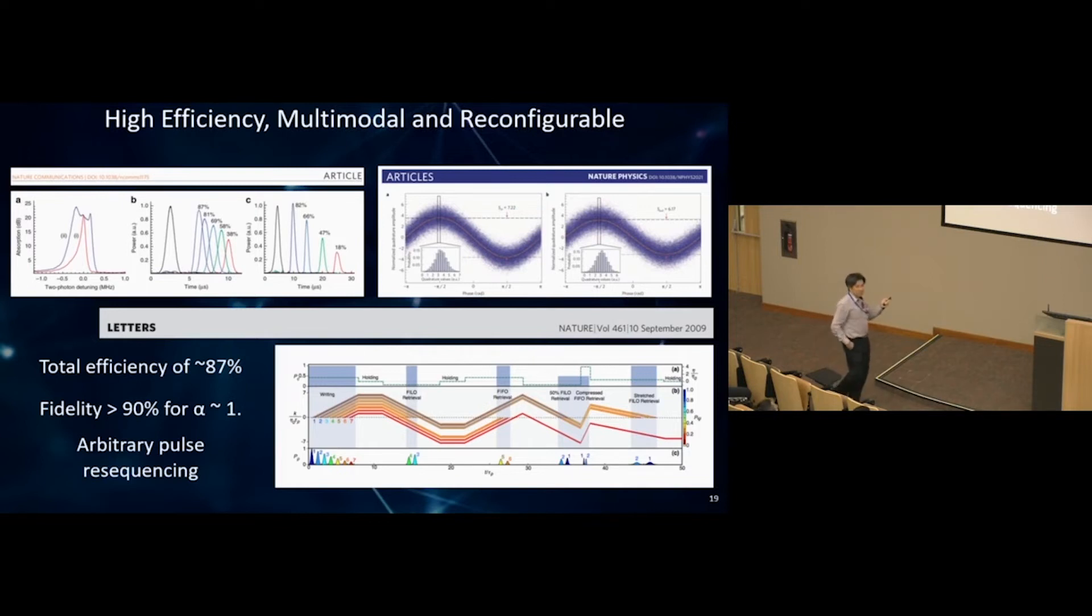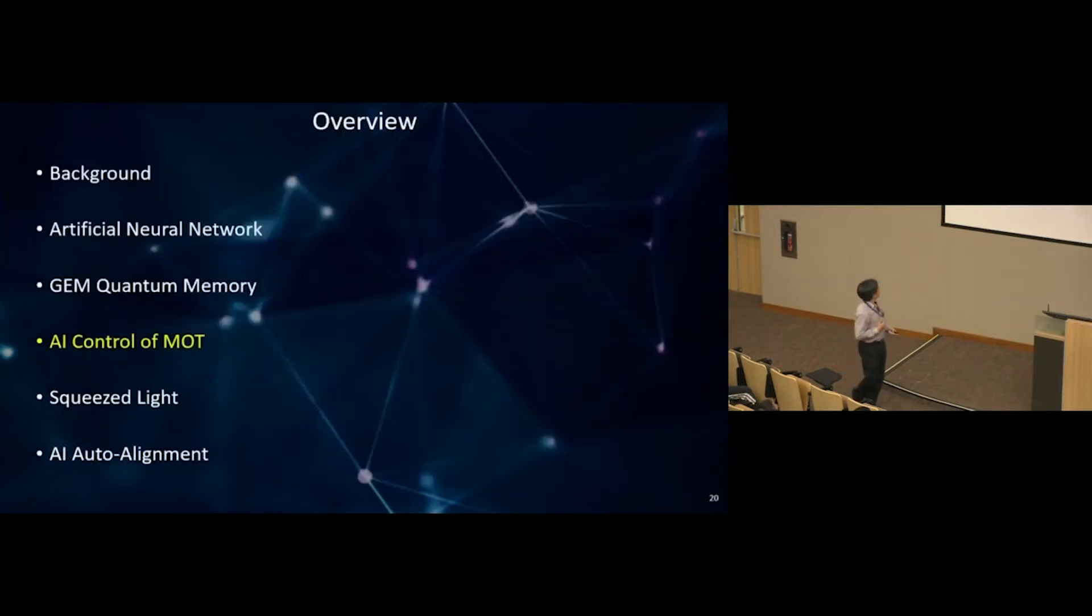The problem is 87% efficiency and 90% fidelity may not be good enough. We're still striving for much higher efficiency and fidelity. To do that, we need an atomic system that is very, very high in OD. The remainder of the talk is to see how we can achieve very high OD magneto-optical trap.